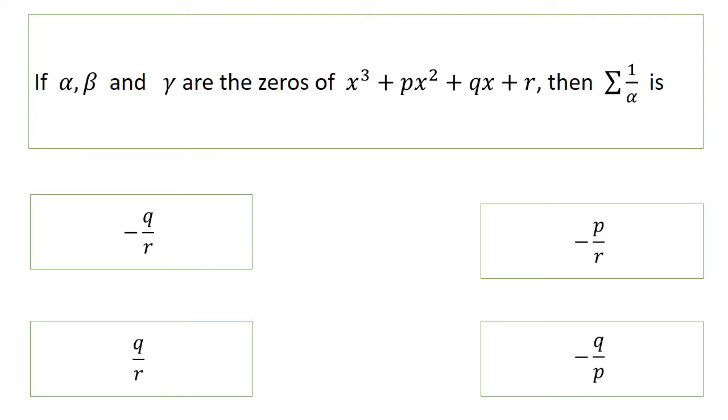You know how to find Σα, Σαβ, and αβγ because it is a cubic equation. Now what is Σ(1/α)? The answer is q/r, but in the book it is given as -p/r—it is wrong, okay, so it is q/r.